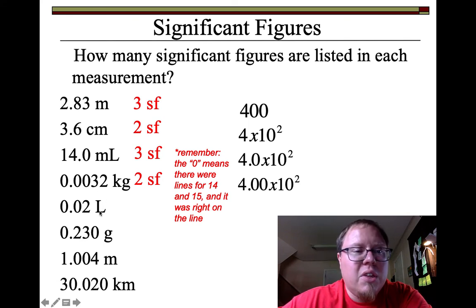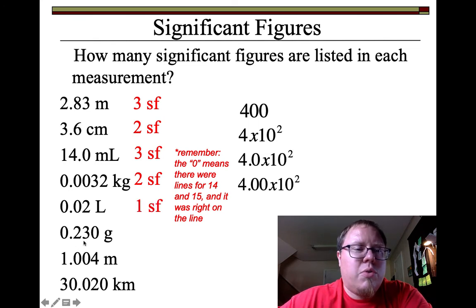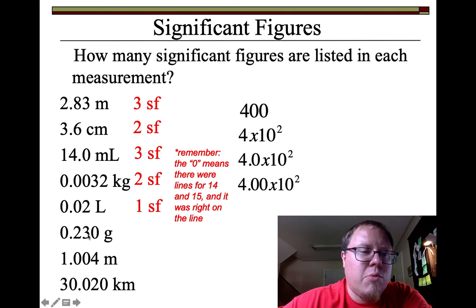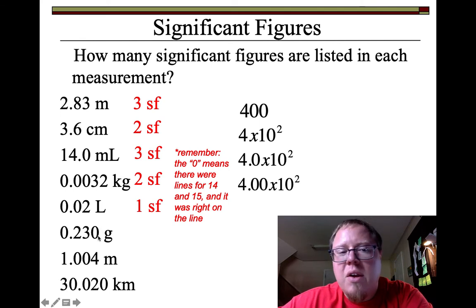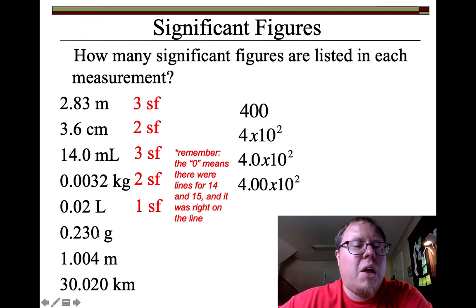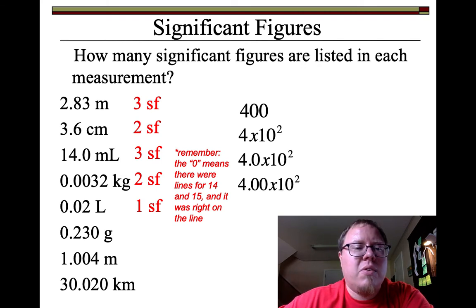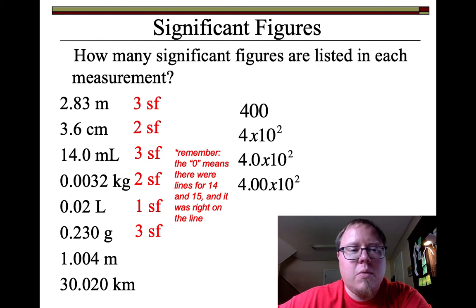0.02 liters — the zeros in front don't count, so that's one significant figure. 0.230 grams — the 2 and the 3 count. This zero on the end is the same as the 14.0 example: it's there because we had a 0.23 and maybe a 0.24 line, and we're estimating it's right on 0.23. So we put a 0 there because we could have read between the lines if it were a little higher. 0.230 has three significant figures: tenths, hundredths, and thousandths place.